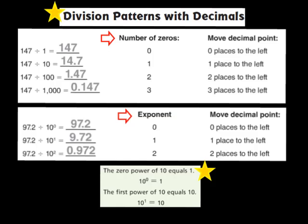What I notice first is this: in the first problem, we have 147 being divided by 1. Well, I know that in 1 there are zero zeros. So that means my number is going to stay the same. So 147 divided by 1 is still going to be 147.